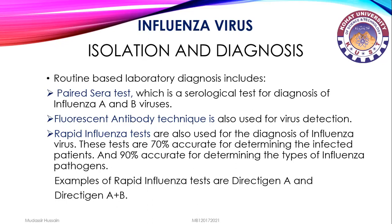Routine laboratory diagnosis includes: paired serum test, which is a serological test for diagnosis of influenza A and B viruses; fluorescent antibody technique, also used for virus detection; and rapid influenza test, also used for diagnosis. These tests are 70% accurate for determining infected patients and 90% accurate for determining the types of influenza pathogens. Examples of rapid influenza tests are Direct Region A and Direct Region A plus B.